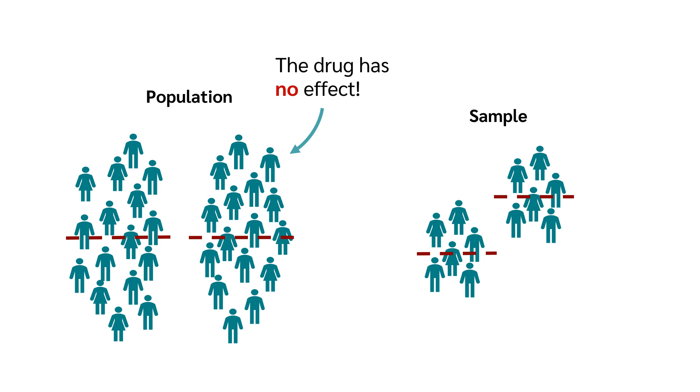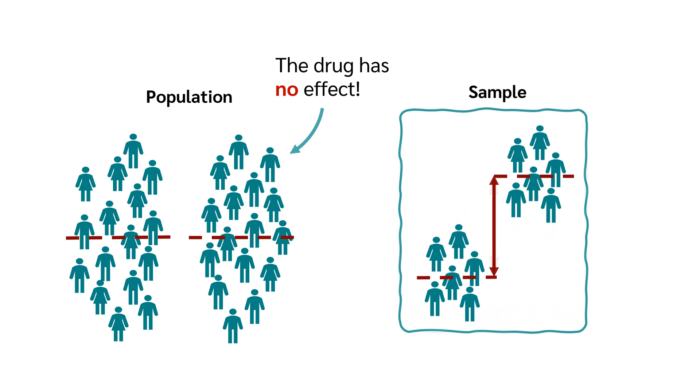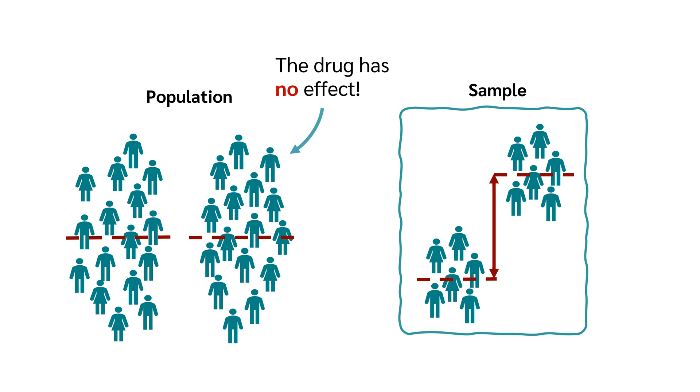If we now take a random sample and it turns out that the drug has a large effect in a sample, then we can ask how likely it is to draw such a sample, or one that deviates even more, if the drug actually has no effect. So in reality, on average, there is no difference in a population.